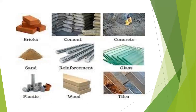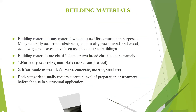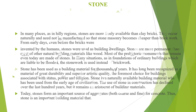Now we are going to see about types of building materials. Building materials are classified into two categories: one is natural building materials and another one is man-made building materials. Natural building materials include stone, sand, and wood. Man-made building materials include cement, concrete, steel, etc. First we are going to see about stone.